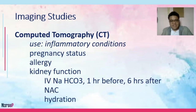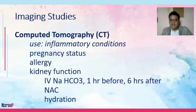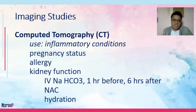CT scan is used in GI for inflammatory conditions and to evaluate the liver, spleen, pancreas, and pelvic organs for structural abnormalities. Prior to CT scan, you need to know the pregnancy status of your patient — if less than 20 weeks pregnant, the physician may need to reconsider, since a lead shield cannot be used for abdominal CT scan.